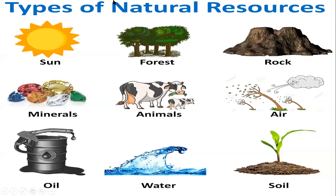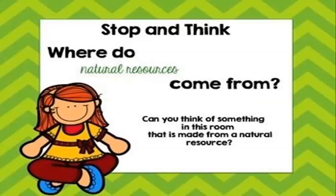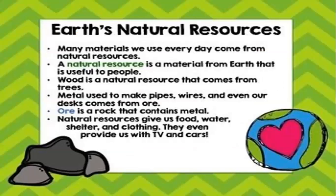Types of natural resources include energy from the sun, forests, rocks, minerals, animals, air, oil, water, and soil. All of these are examples of natural resources. So natural resources means a material from the earth that is very useful to people.